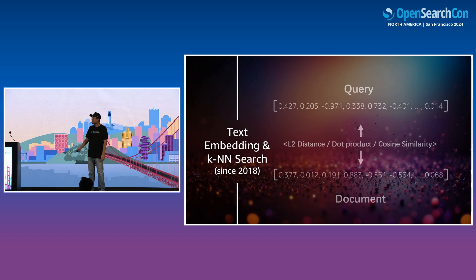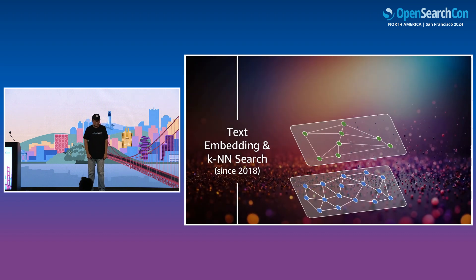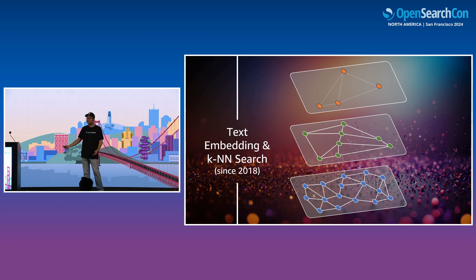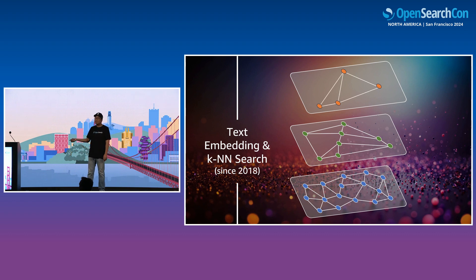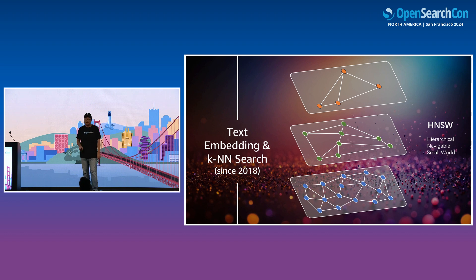Thanks to graph-based algorithms, we can locate items into a graph and search over its neighborhood — that is HNSW, Hierarchical Navigable Small World. We can search over a large vector base using an accelerated KNN algorithm, and KNN becomes ANN, where A stands for approximate. This was already available since OpenSearch was still called OpenDistro.